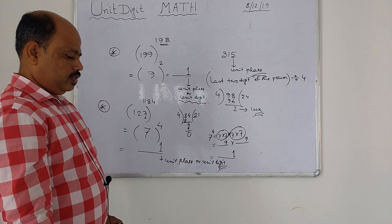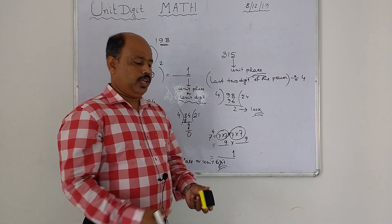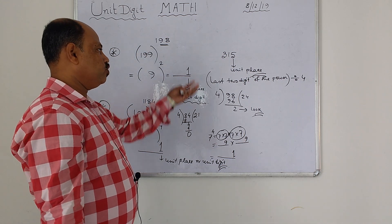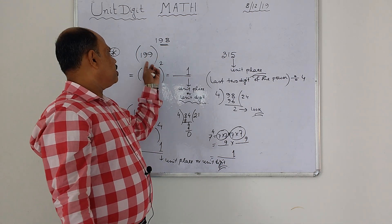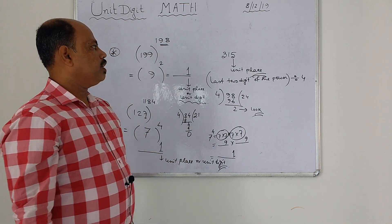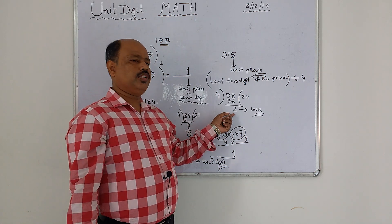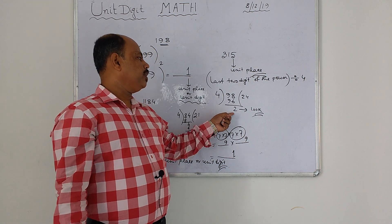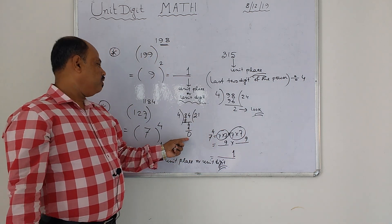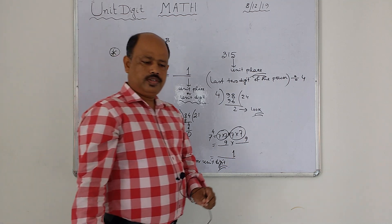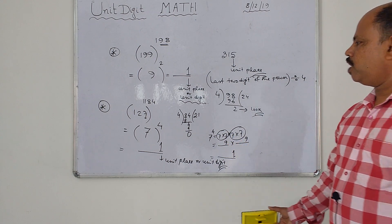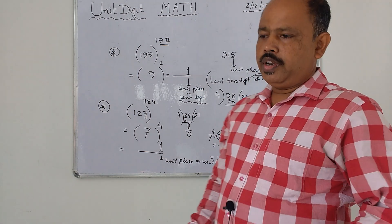Very easy way to find the unit digit of any number in exponent form. Mind the two rules: after division of the last two digits of the power by four, see what is the remainder. If there is a remainder, write that remainder as the power. If there is no remainder, always write four as the power.